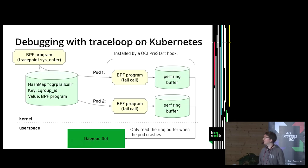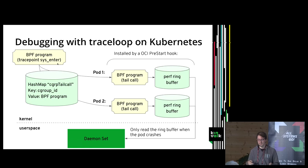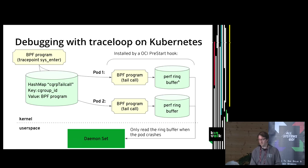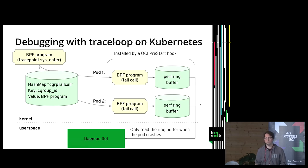How TraceLoop works is a bit different from other gadgets. I install a BPF program on the tracepoint sys_enter — every time a syscall is executed for any process on the system, this BPF program runs. It checks if the current cgroup of that process needs to be traced, and if so redirects execution to a different BPF program. Each pod has its own ring buffer where syscalls are stored permanently in memory, but sent to user space only when the user requests it — not continuously, only on demand.